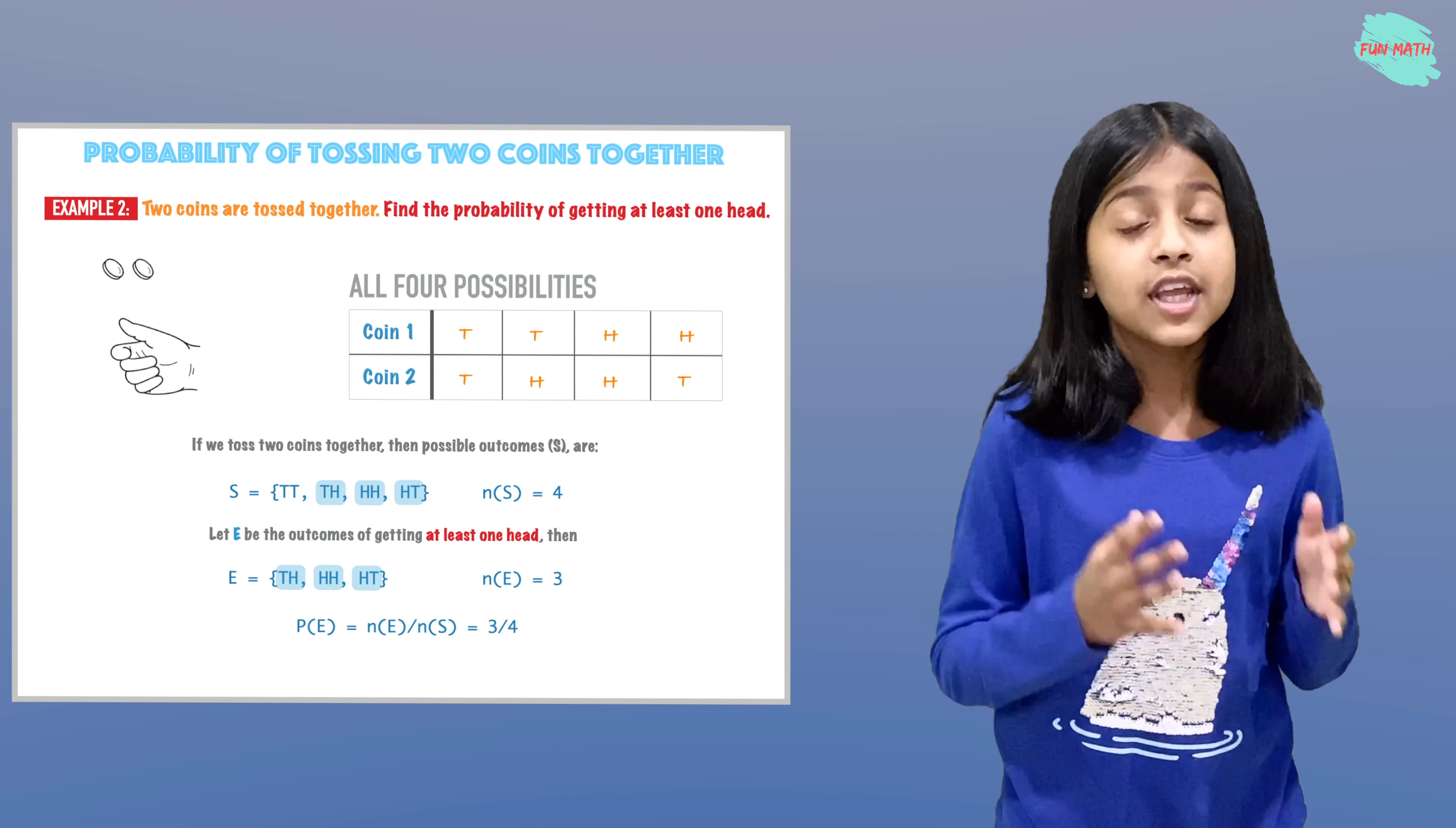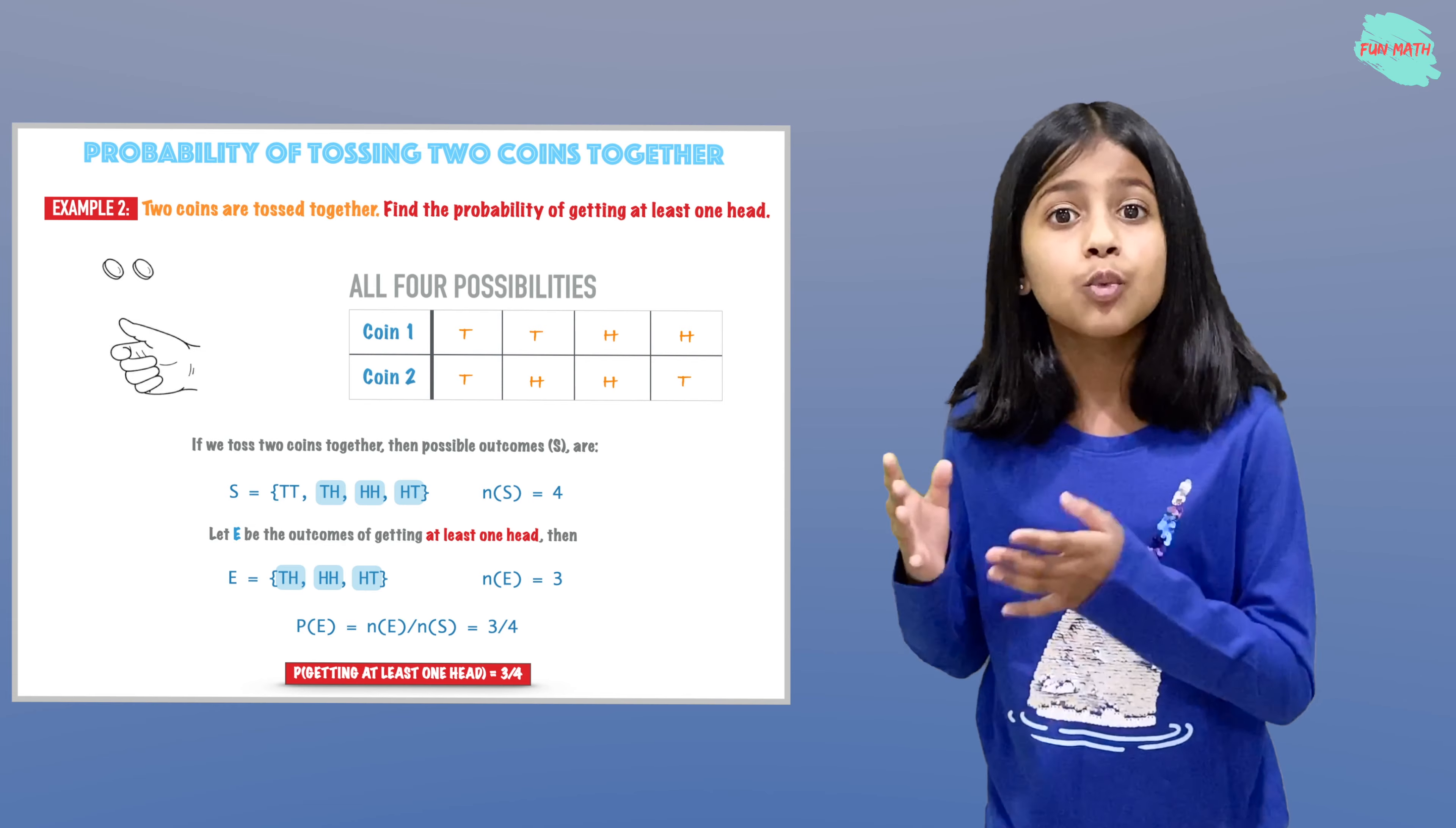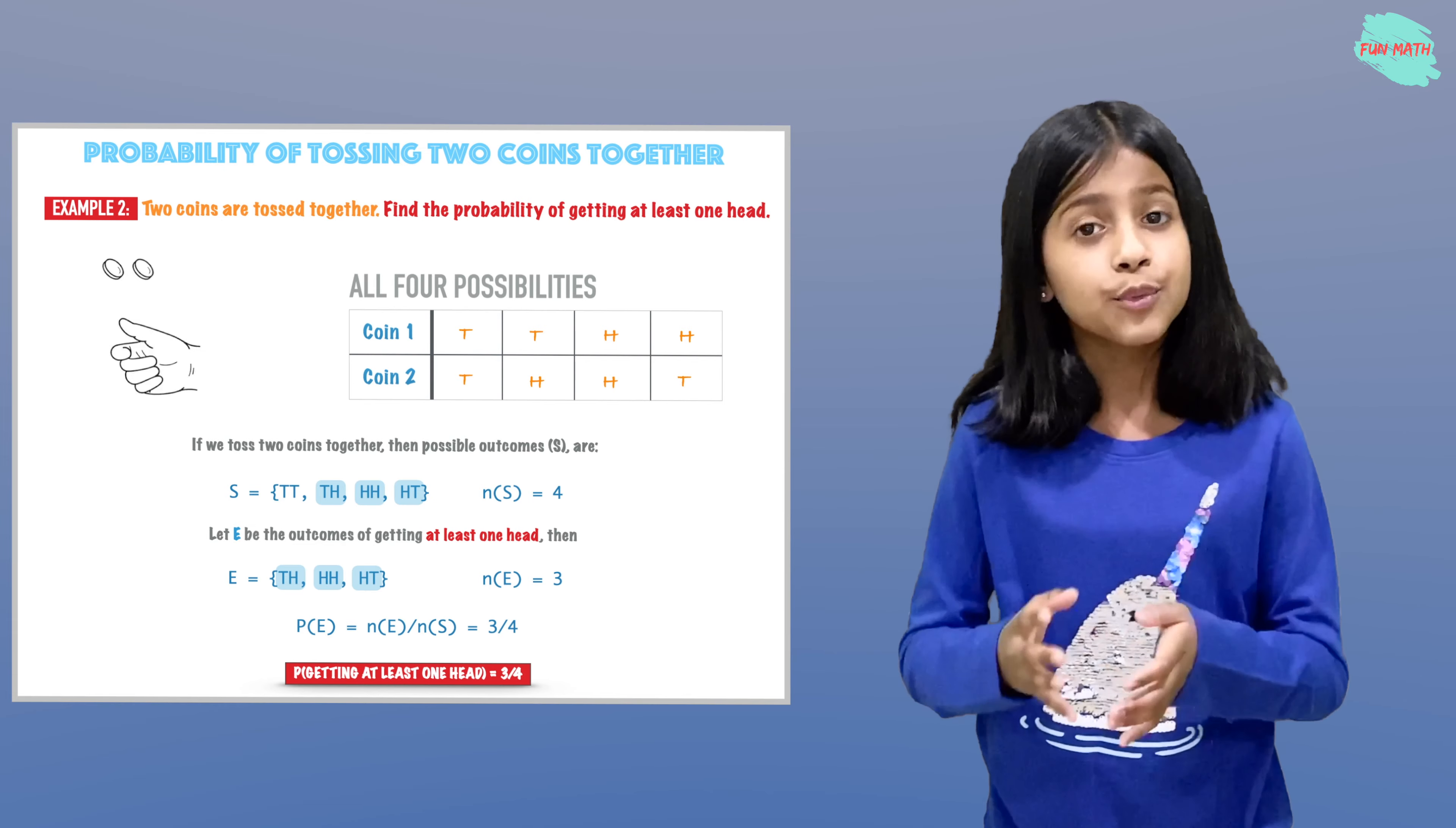If we simplify this, we will get three over four. So the probability of getting at least one head is three over four.